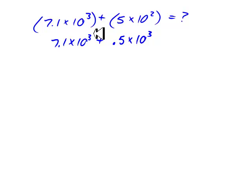And now, I have the same units, 7.1 thousand and 0.5 thousand. I can add those together, 7.1 and 0.5 gives me 7.6 thousand. And that's our answer.